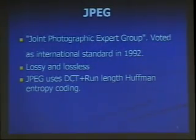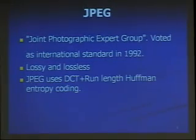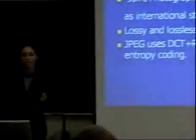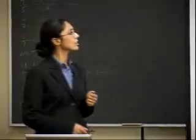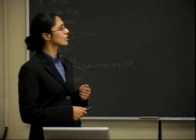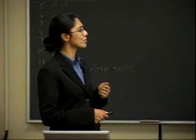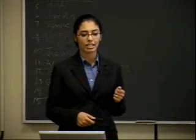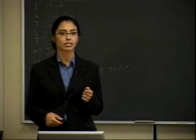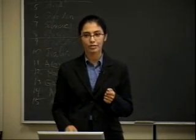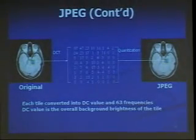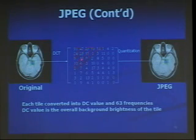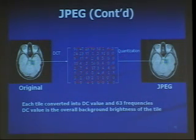One of the important types of compression is JPEG, as it is adopted by DICOM, which stands for Digital Imaging and Communication in Medicine. JPEG stands for Joint Photographic Expert Group. It was voted as an international standard in 1992, and it is both lossy and lossless. The lossy JPEG uses a discrete cosine transform plus Huffman coding, while the lossless JPEG is based on an algorithm developed by HP. The first step in the JPEG algorithm is to divide the image into 8x8 sub-blocks. Each sub-block is transformed using DCT, and then an ordering algorithm is applied to the output, resulting in long runs of zeros that can be eliminated through the quantization process.